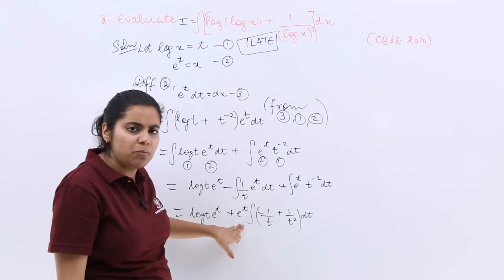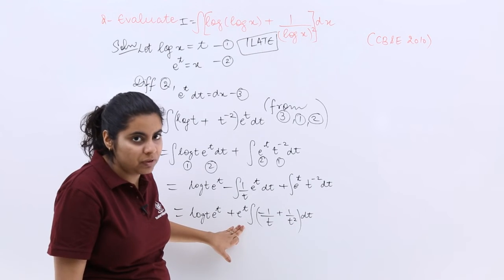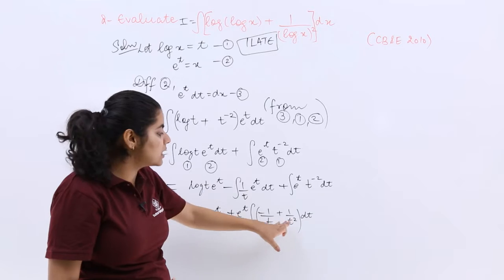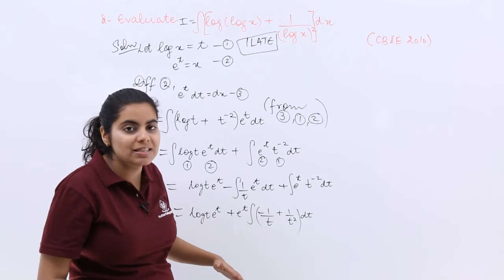Now you see isn't it the same form e raised to the power x and in the bracket f dash x plus f(x). So what is the answer to it? It is nothing but e raised to the power x times f(x) plus c.